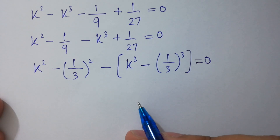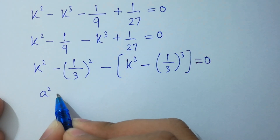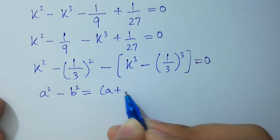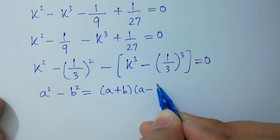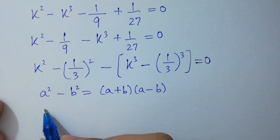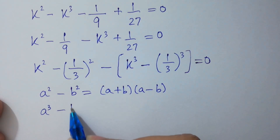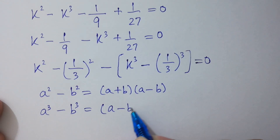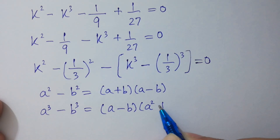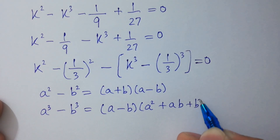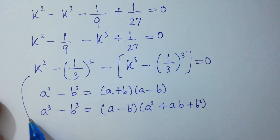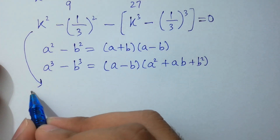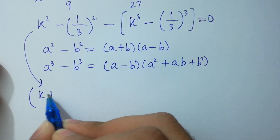Very simple. As you know, a squared minus b squared equals a plus b times a minus b, and a cubed minus b cubed equals a minus b times a squared plus ab plus b squared. So this equation will become k plus 1 over 3...